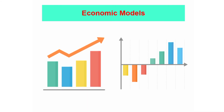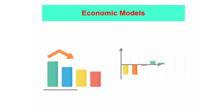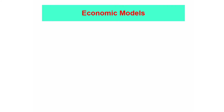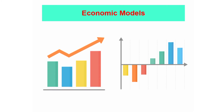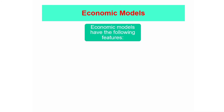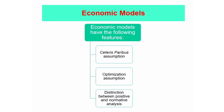Economists use models to describe economic activities. Models are simple frameworks for understanding an economic phenomenon. They provide aid in understanding complex economic behavior. In economics, models can be in the form of a graph or equation. Economic models have the following features: the Ceteris Paribus assumption, the optimization assumption, and the distinction between positive and normative analysis. We will be discussing each of these features.